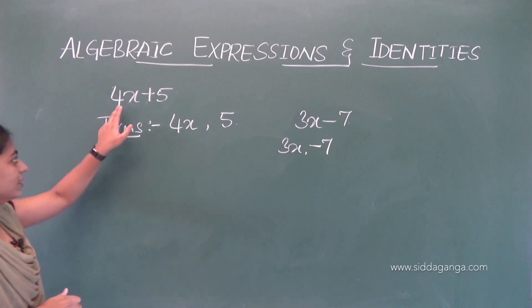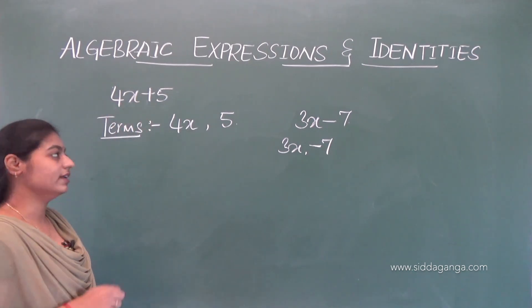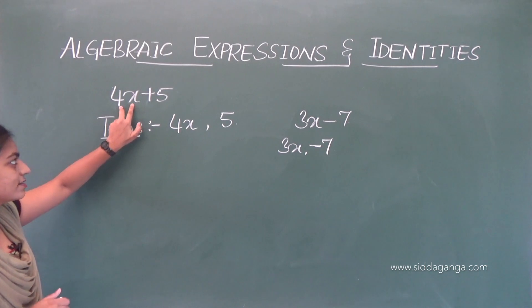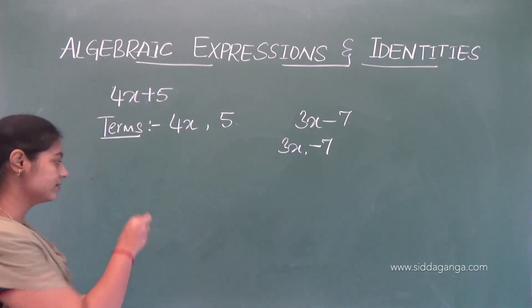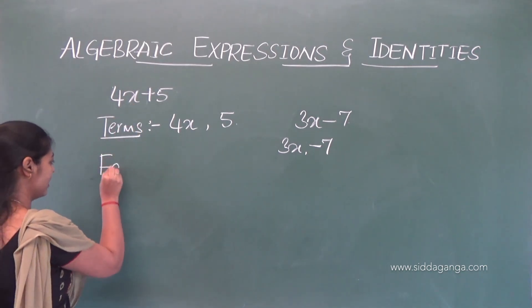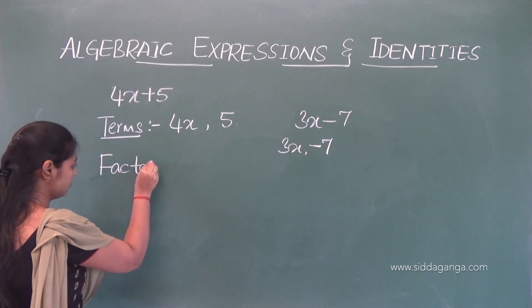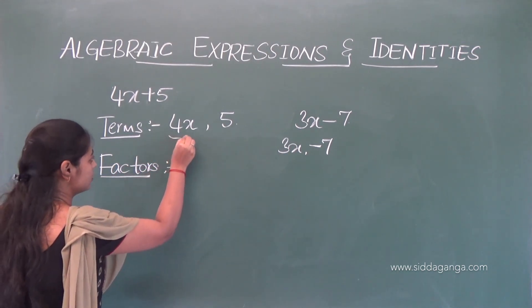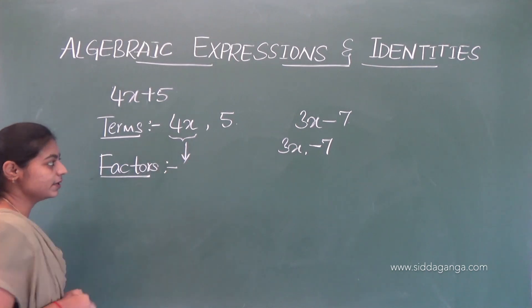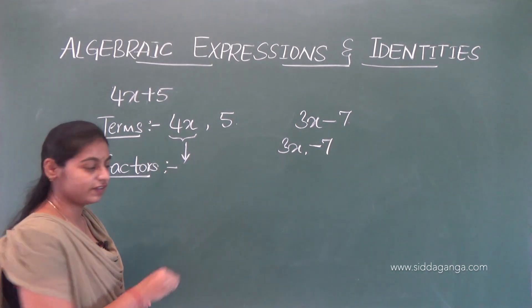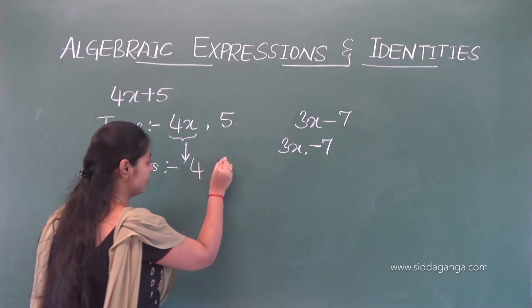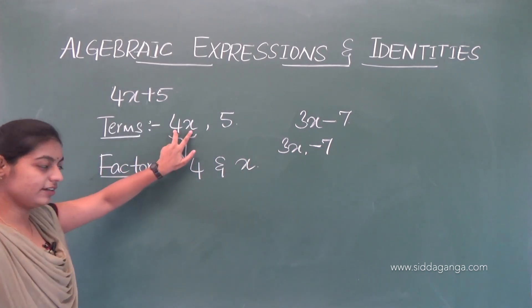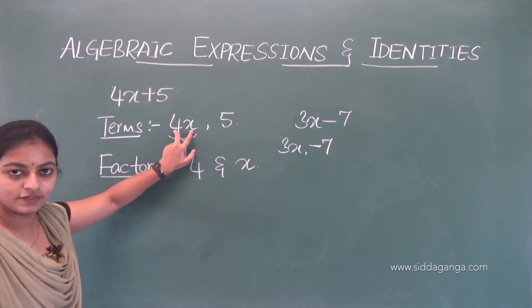The terms are 4x and 5. The product 4x is made up of two factors, which are 4 and x. So 4 and x are factors of 4x.